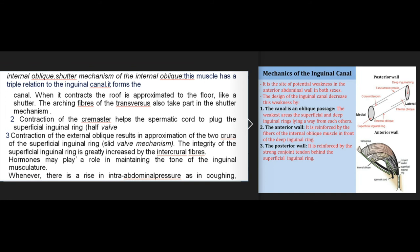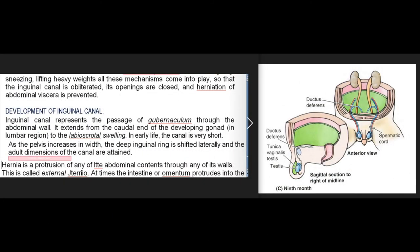Hormones may play a role in maintaining the tone of the inguinal musculature. Whenever there is a rise in intra-abdominal pressure, as in coughing, sneezing, or lifting heavy weights, all these mechanisms come into play so that the inguinal canal is obliterated, its openings are closed, and herniation of abdominal viscera is prevented. Development of the inguinal canal: the inguinal canal represents the passage of the gubernaculum through the abdominal wall, extending from the caudal end of the developing gonad in the lumbar region to the labioscrotal swelling. In early life the canal is very short; as the pelvis increases in width, the deep inguinal ring is shifted laterally and the adult dimensions of the canal are attained.